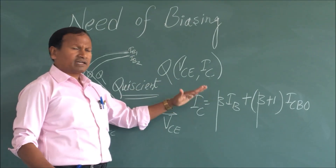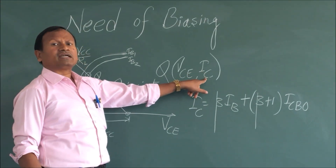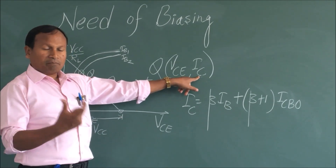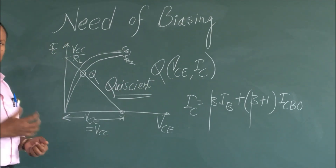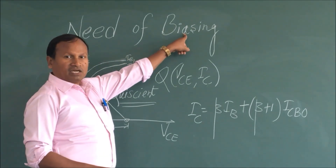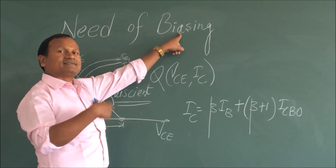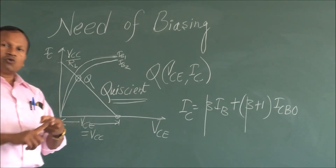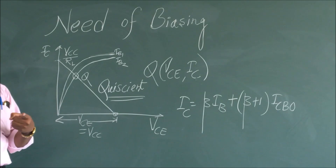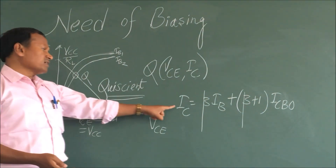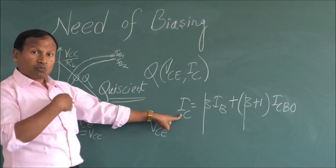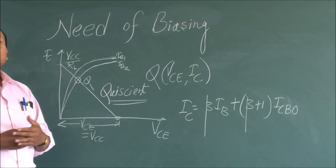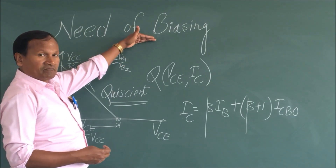We need to understand two things: one, what are the factors that cause variation in collector current IC, and two, what do we do in order to mitigate this problem. The technique which is used to solve this problem is called biasing, and this is why biasing is needed — in order to make the Q-point fixed and to reduce the variation possibility in the collector current. There are different types of biasing: fixed bias, emitter bias, and these are the biasing techniques which are present.